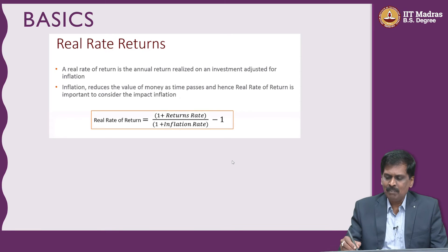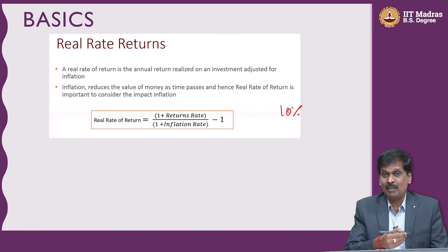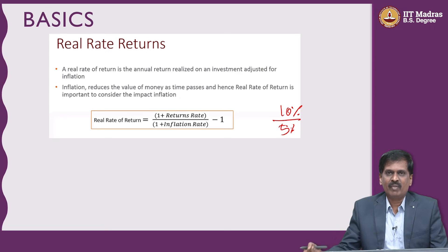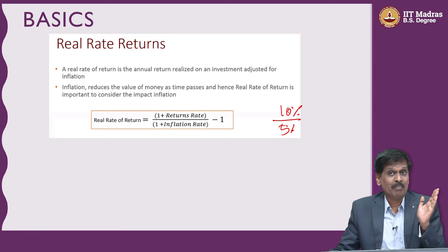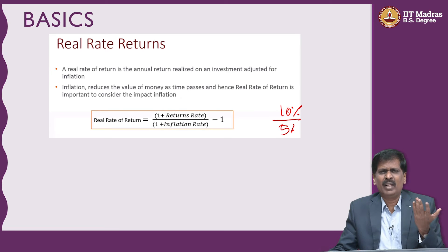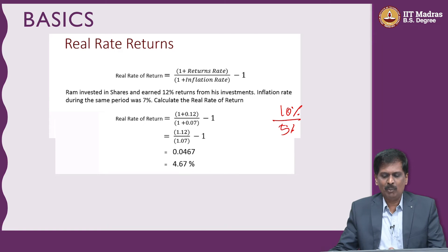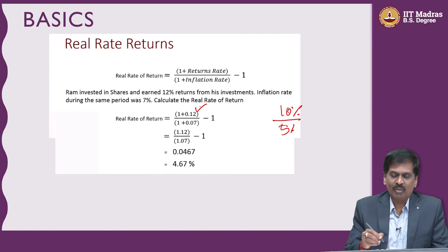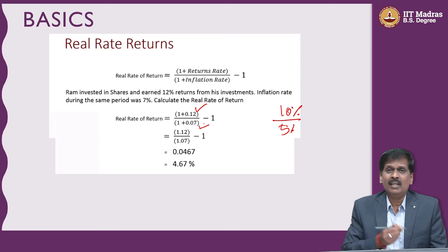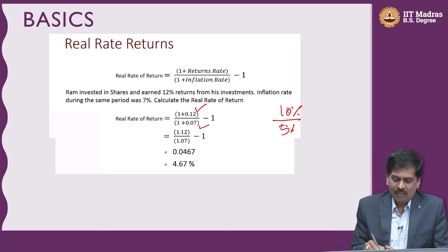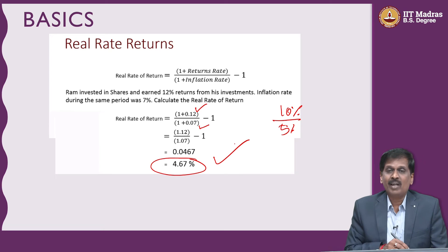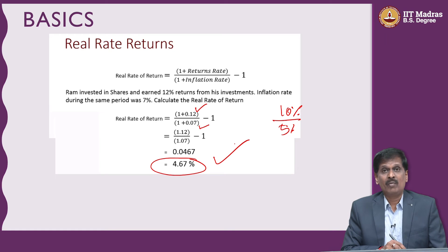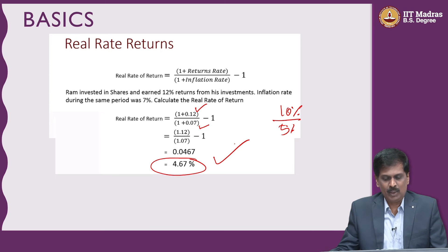The real rate of return: for example, I get 10 percent interest but inflation is 5 percent. The numerator is 1.1 and the denominator is 1.05, so the real rate of return is not simply 10 minus 5 equals 5 percent — it is approximately 4.8 percent. If you make 12 percent from the equity market and inflation is 7 percent, you might think your real return is 5 percent, but actually it is 4.67 percent. Fixed deposits will not even come close to generating these kinds of real returns.